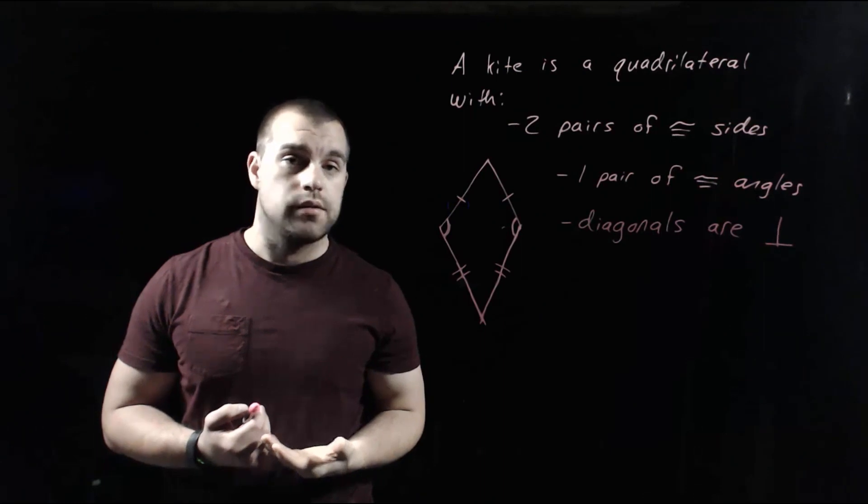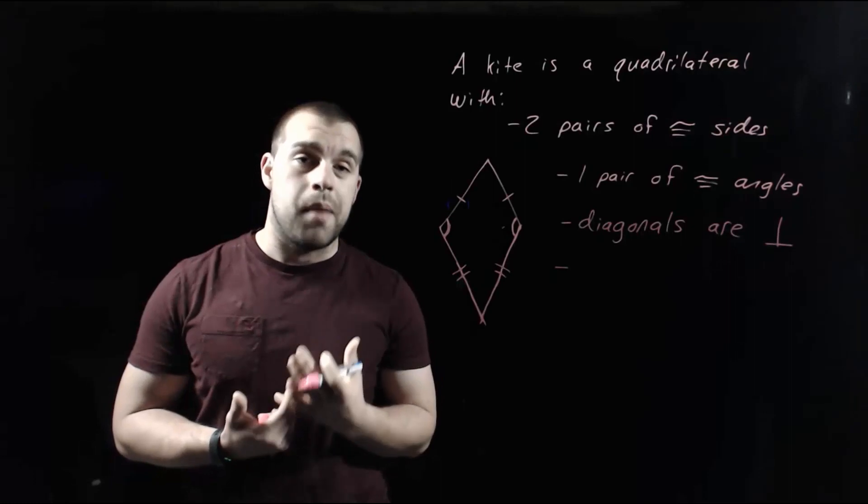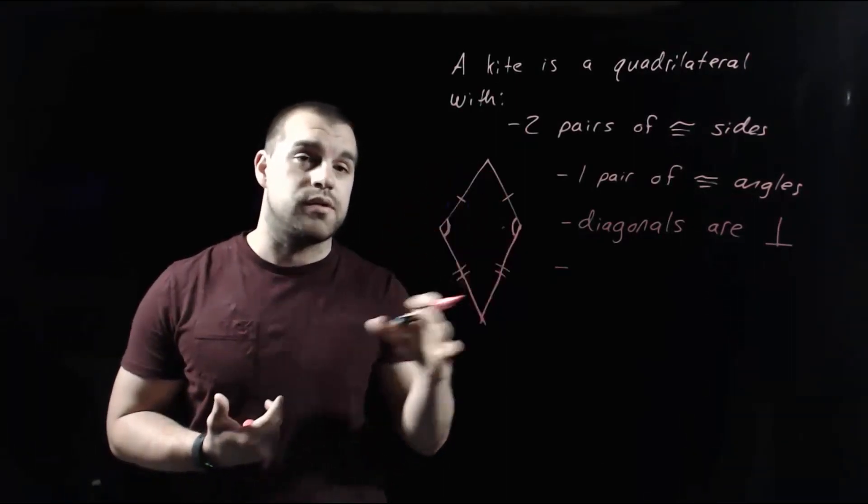Our next property also deals with the diagonals, and the diagonals are going to bisect the angles around the outside of our figure.